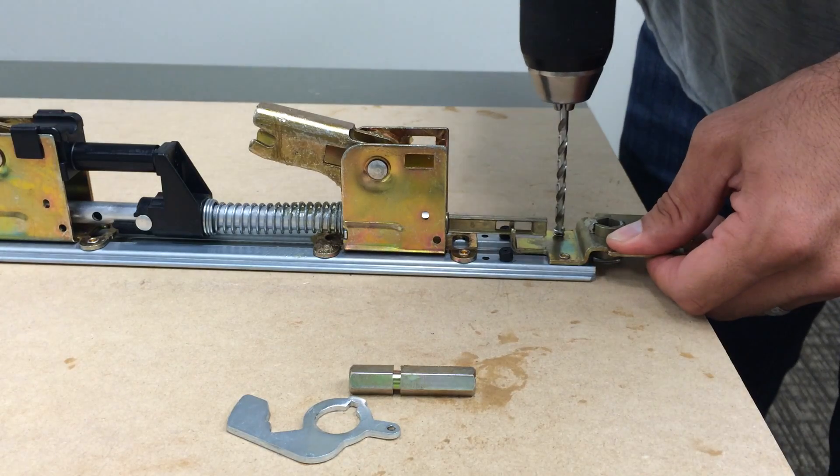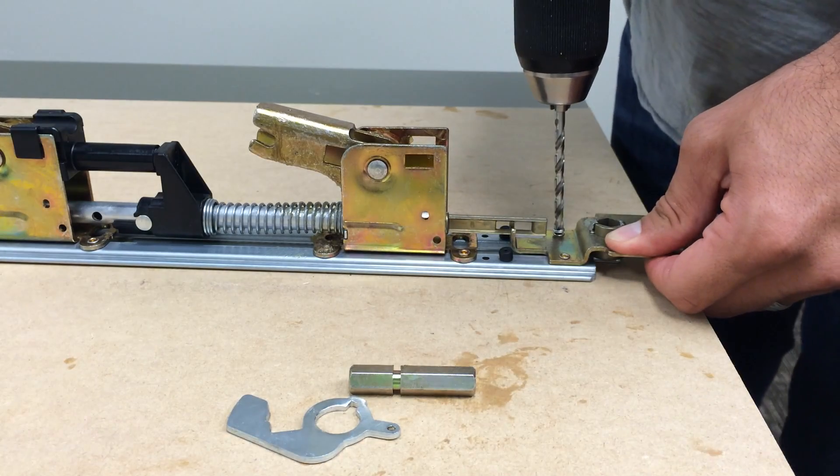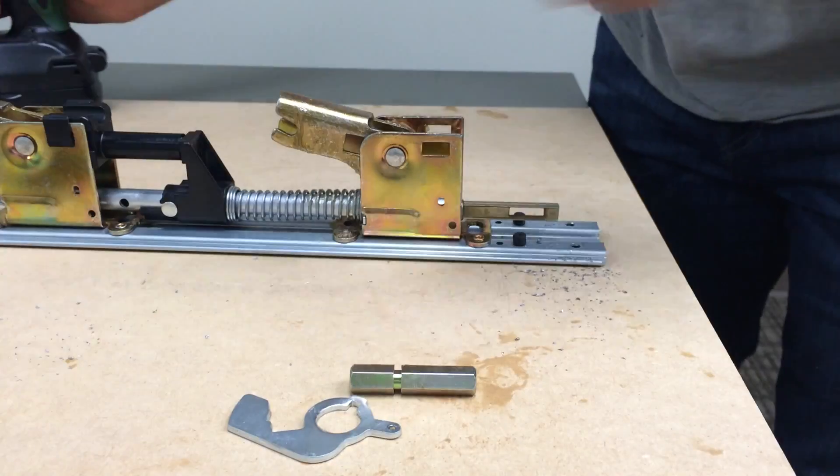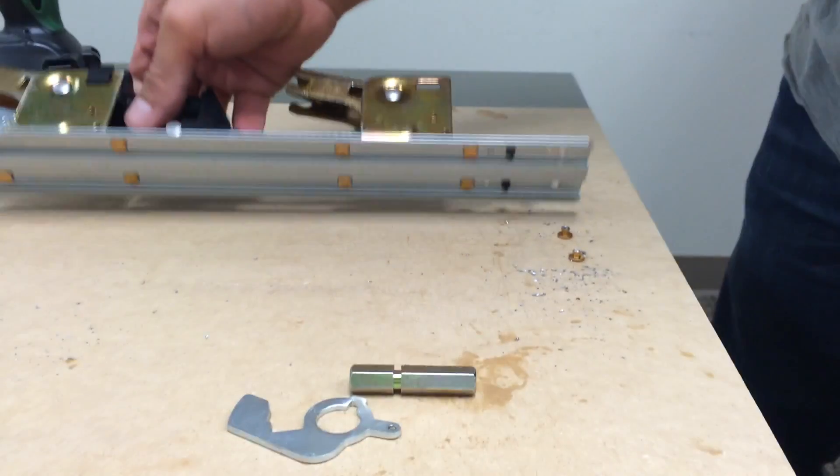Second option is if you have a sharp 3/16 drill bit you can also drill out those rivets. Slightly messier but that'll do the trick as well.